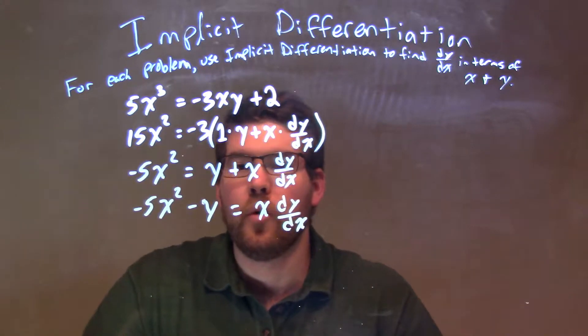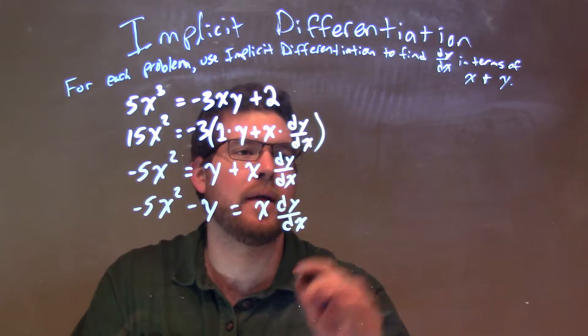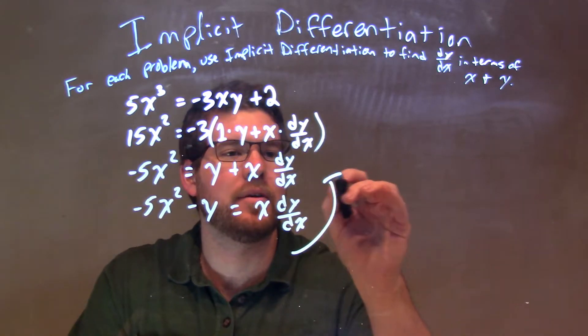Now, what I can do is divide both sides by x, giving me dy/dx by itself. So, I have, let's go fit that up here.